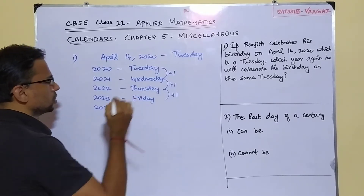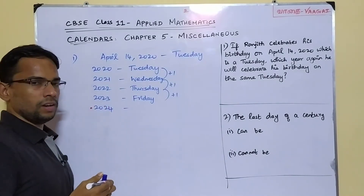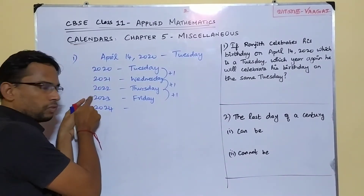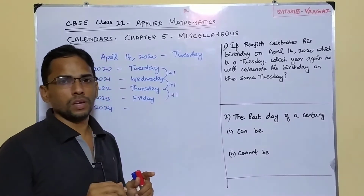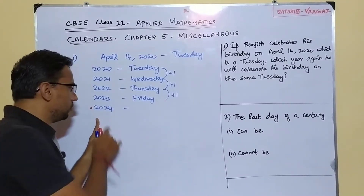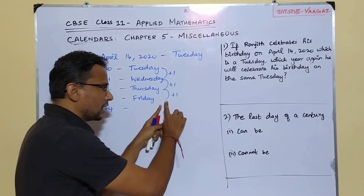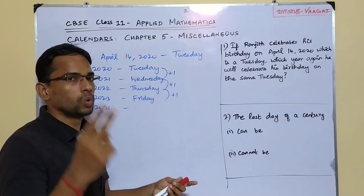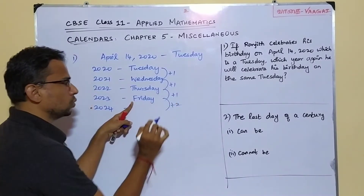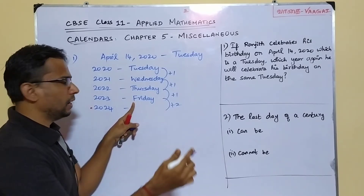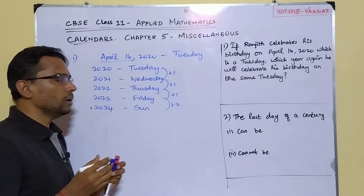The next year is 2024, and we should be careful here because 2024 is a leap year. When we travel from 2023's April to 2024's April, we will definitely cross February 29th of 2024. That means we are crossing 366 days, which gives two odd days. So we do plus two: Friday plus two skips Saturday and lands on Sunday. So 2024's April 14 is a Sunday.